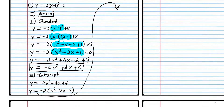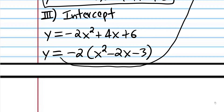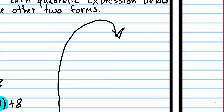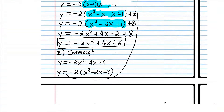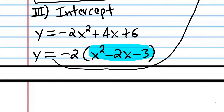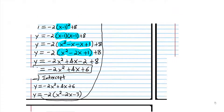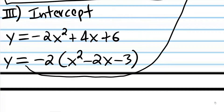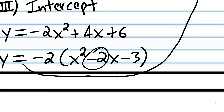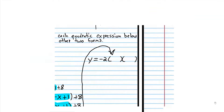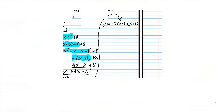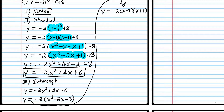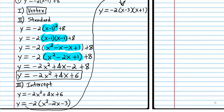The reason we did that is because now we can factor the inner quadratic expression really easily. What two numbers multiply to negative 3 and add up to negative 2? The answer is negative 3 and 1. Negative 3 times 1 is negative 3, and negative 3 plus 1 is negative 2.